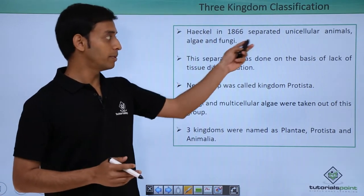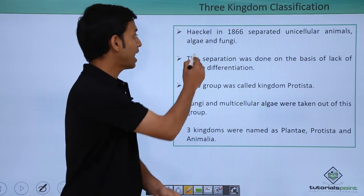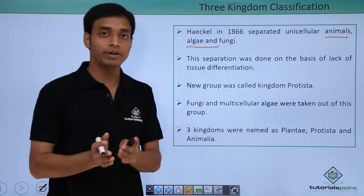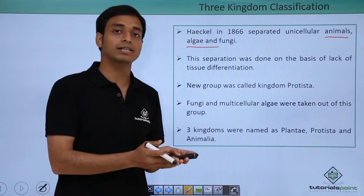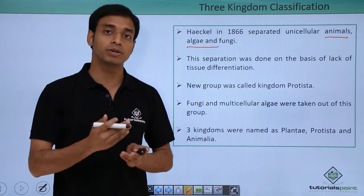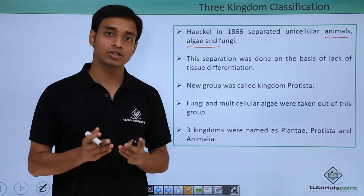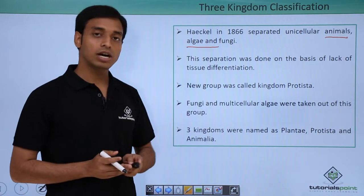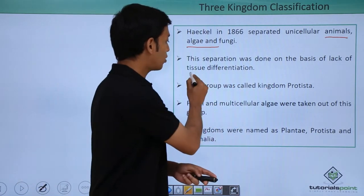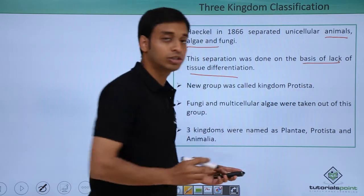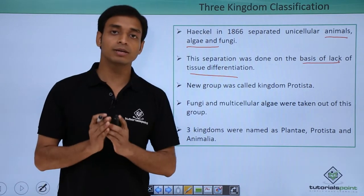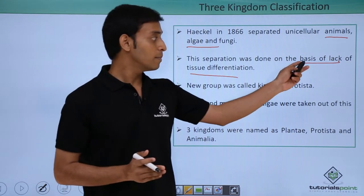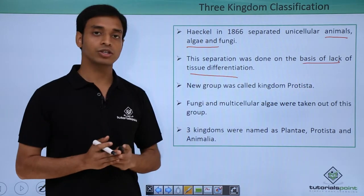What Haeckel did was separate unicellular animals, algae, and fungi from the normal plants and animal groups that we studied in the previous two kingdom classification system. This separation was done on the basis of the lack of tissue differentiation, which is very important to note in the case of three kingdom classification.